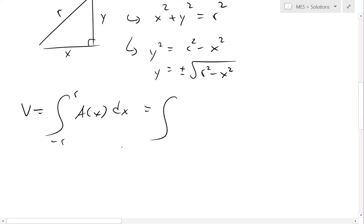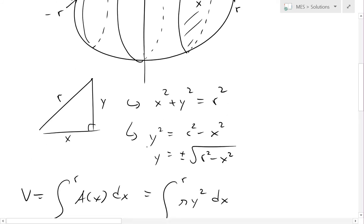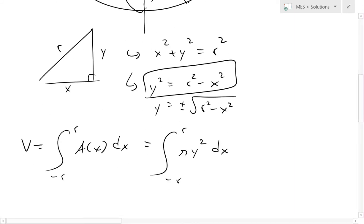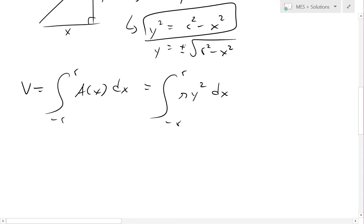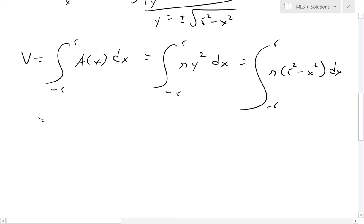Now this equals negative r to r of, now this area is going to be pi y squared dx. And now we know that y squared is right over here, which is r squared minus x squared. So it's already squared for us, so we don't have to deal with this plus or minus square root sign there. So we just plug that in, equals negative r to r of pi times r squared minus x squared dx. Now we have it as a function of x right there.